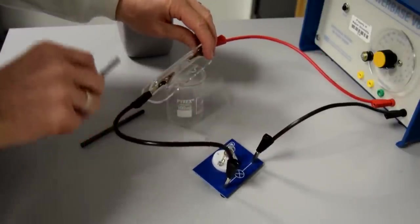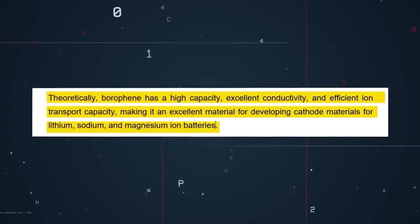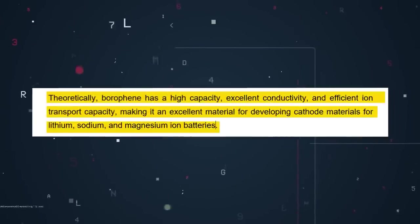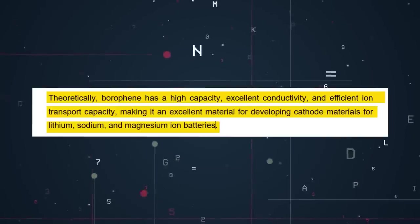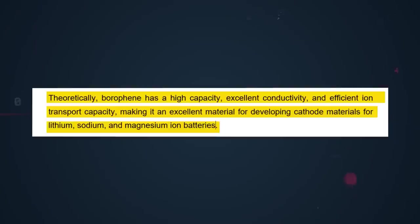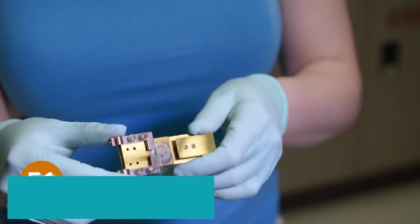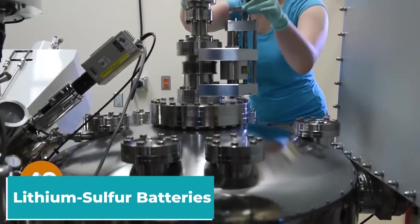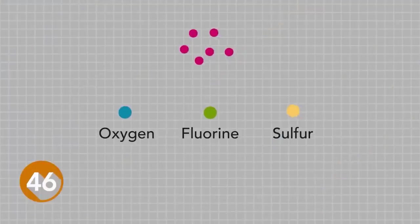Theoretically, borophene has a high capacity, excellent conductivity, and efficient ion transport capacity, making it an excellent material for developing cathode materials for lithium, sodium, and magnesium ion batteries. Another type of battery where borophene might prove useful is in the development of lithium sulfur batteries, which has suffered lots of setbacks. Finding the correct anchor material to prevent the shuttle effect is a problem. Even graphene cannot work as the anchor material.